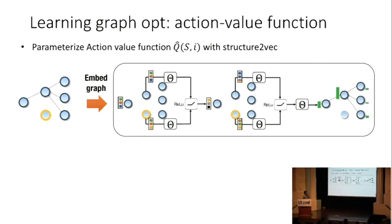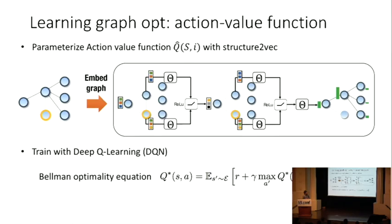The difficulty is how to parameterize your action value function. The answer is to use our graph embedding framework. Here, we take a partially solved graph as input, and the output is the predicted score on each node, which equals to the action value function. We use some standard framework called deep Q-learning, which fits this kind of equation. I won't elaborate it more because it's more of a standard trick.